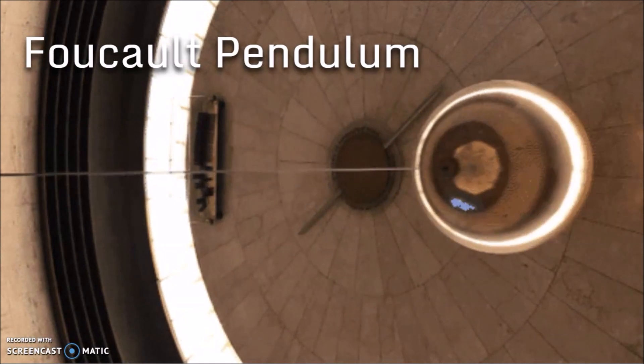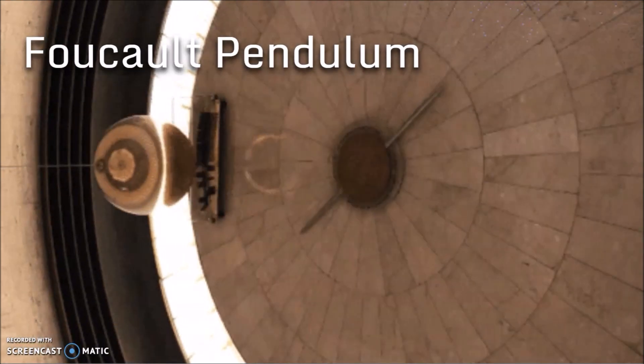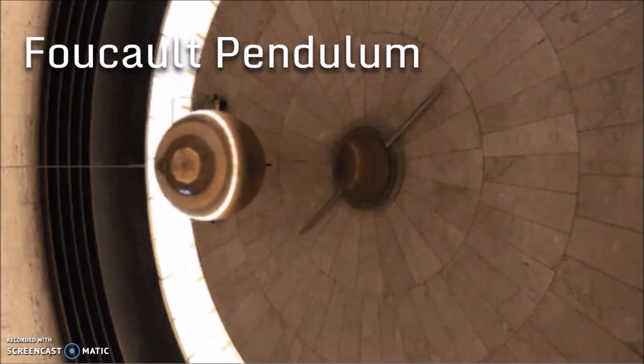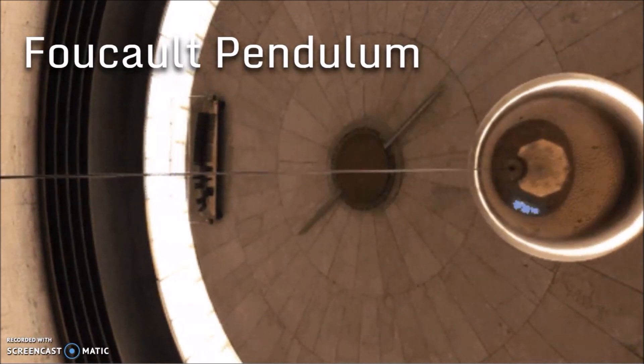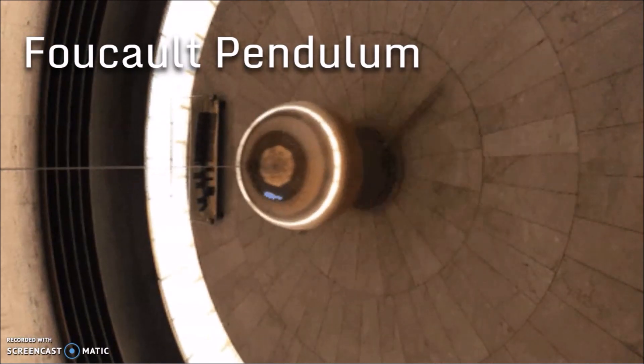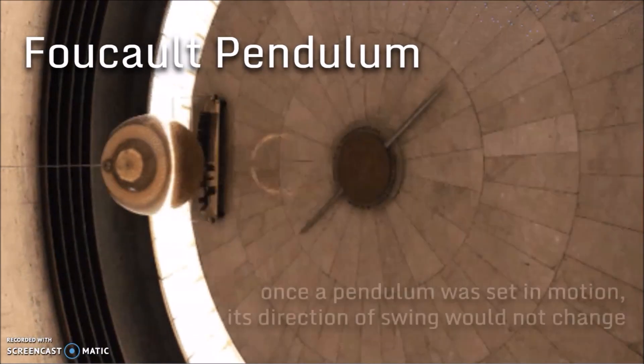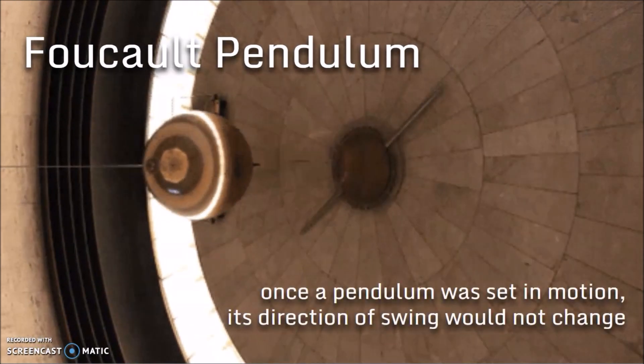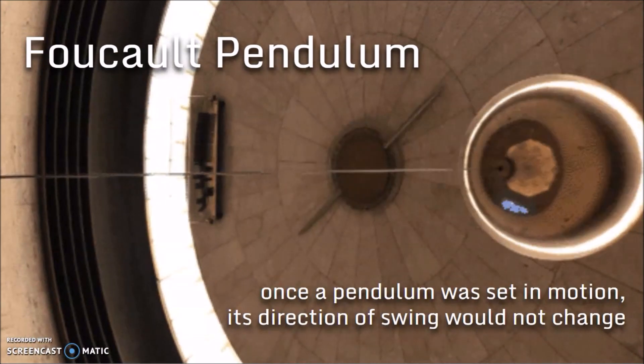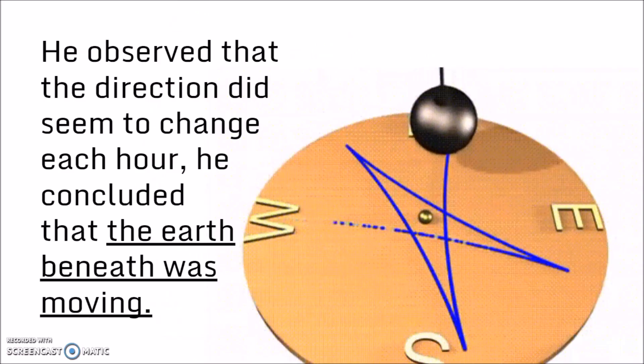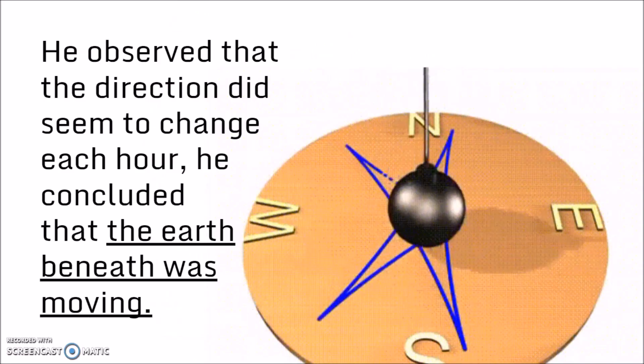One piece of evidence is called the Foucault Pendulum. Foucault was a physicist in the 1800s and he attached an iron ball to a pendulum 20 stories high. Physicists of the time knew that once a pendulum was set in motion, its direction of swing would not change. Foucault, however, observed that the direction did seem to change.